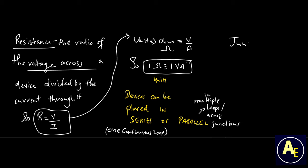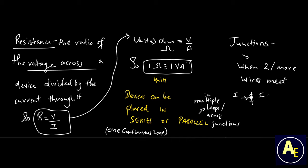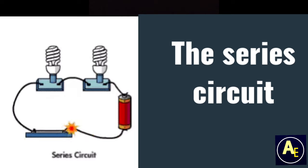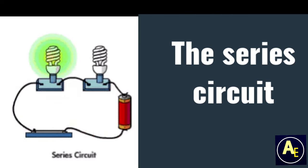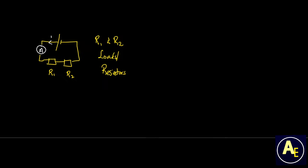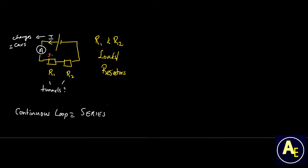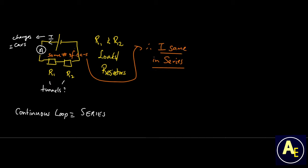Series circuits are considered to be in one continuous loop, whereas parallel circuits are created across junctions — a junction being a point where wires tend to intersect or meet. We begin with series circuits, where we have two resistors within the same loop. If we consider these two resistors to be two tunnels and the conventional current as cars, then the same number of cars must pass through both tunnels. Hence in a series circuit, the current is the same.